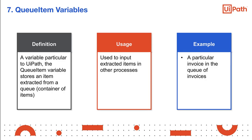The queue item variable stores an item which has been extracted from a container of items, or a queue. Through this extraction, the user can further use the queue items in other processes. This is also a variable that is proprietary to UiPath Studio.